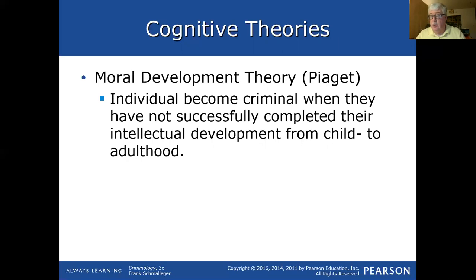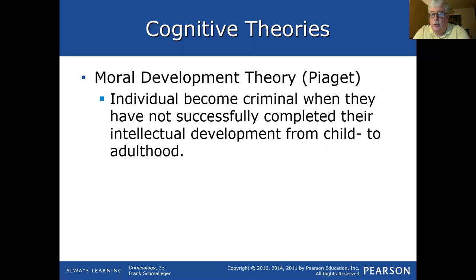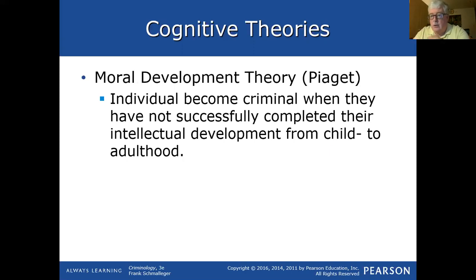According to moral development theory, some people have not developed morally or intellectually as they grow older. It could be severe educational dysfunction, or someone still having the same idea of right and wrong as when they were seven years old. In most U.S. states, children seven and under are considered unable to reason to decide to commit a crime. People who become criminal may have the same thought processes in certain aspects of their personality as they did when they were younger.